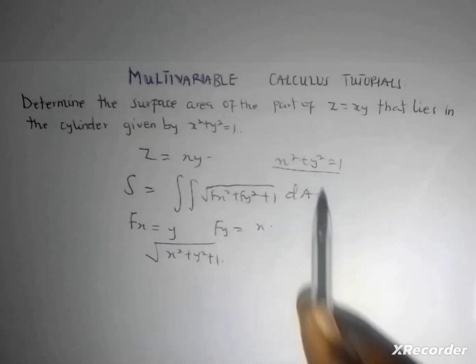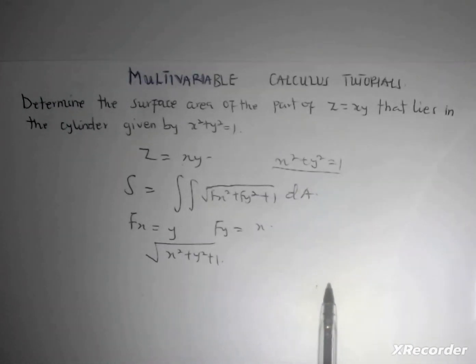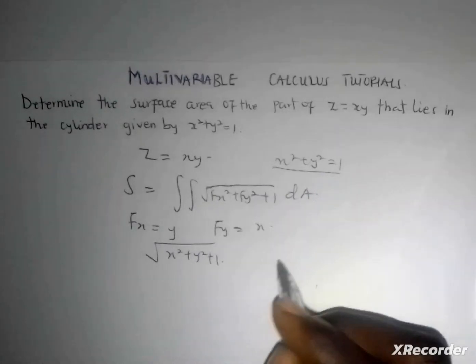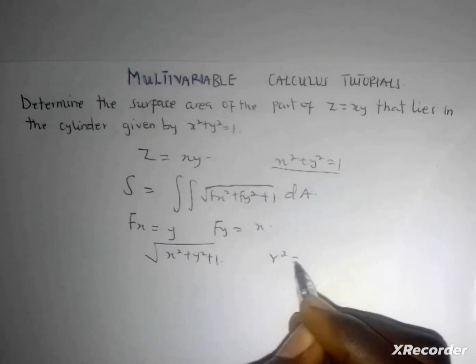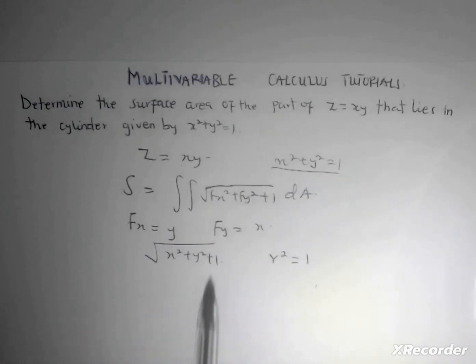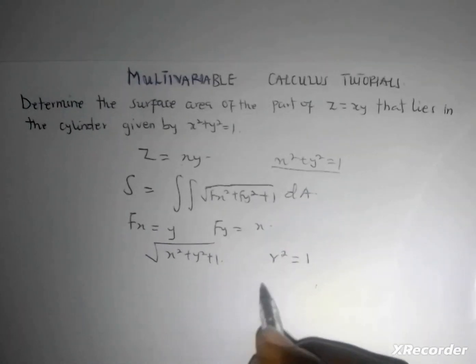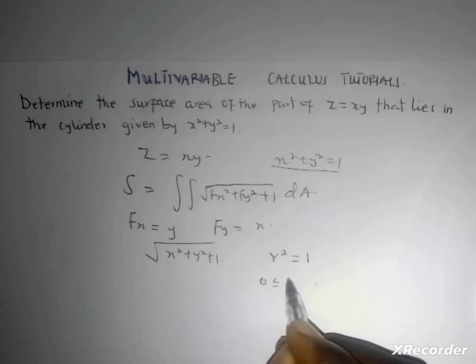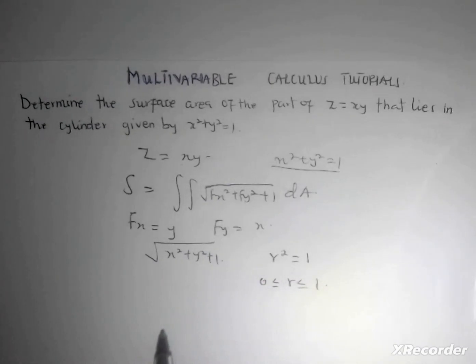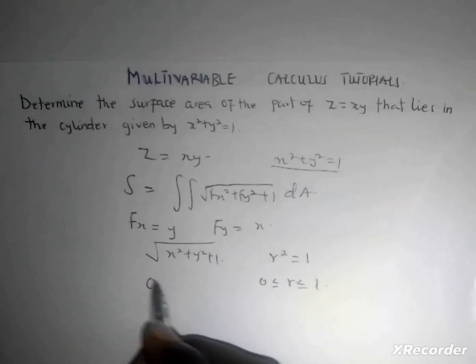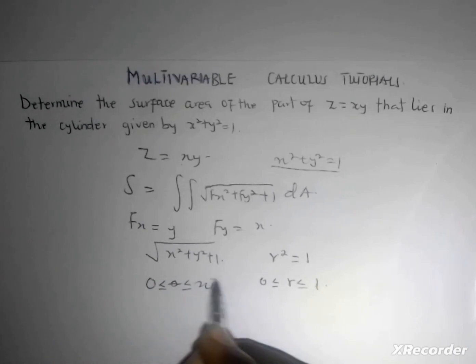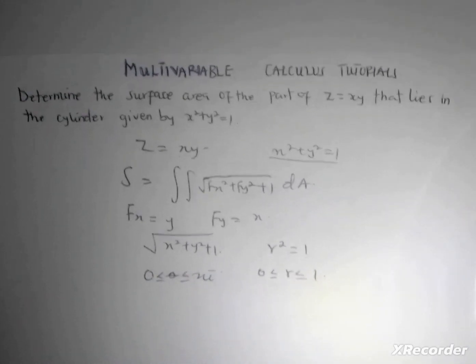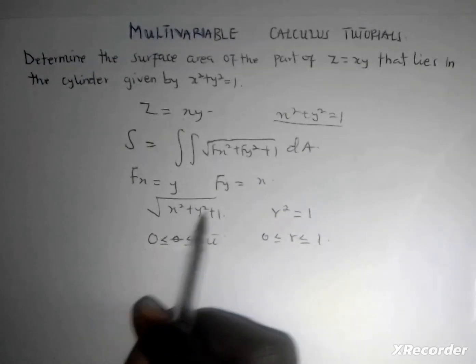This is a cylinder, so we have this expression replaced by r² = 1, meaning we can compute this using polar coordinates. r² = 1 means our radius goes from 0 to 1. Then I'm going to find my theta, which will be from 0 to 2π since it's a cylinder.